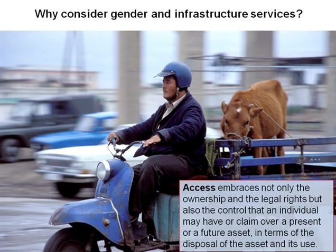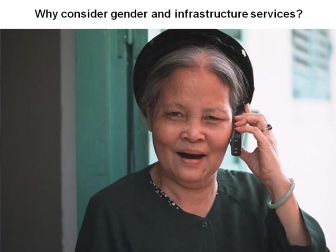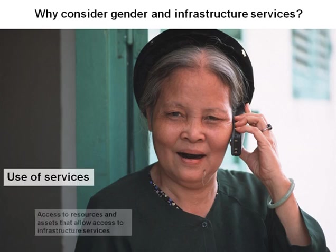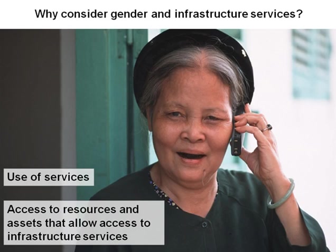There may also be differences between male and female-headed households in terms of ownership of assets and lack of infrastructure services. Who carries the burden of fetching water and fuel wood when water and energy infrastructure services are not universally available? This module will focus on two elements: use of services, and access to resources and assets to be able to access infrastructure services, for example car ownership and mobile phone ownership.